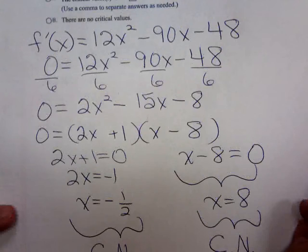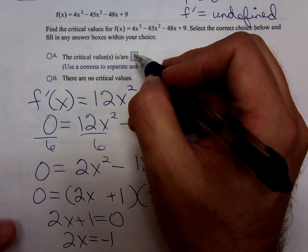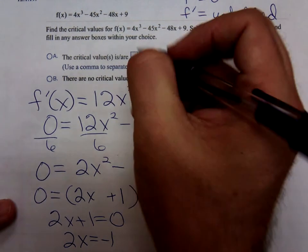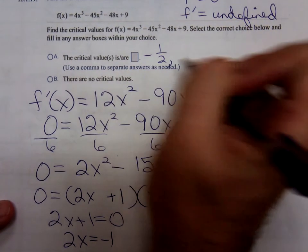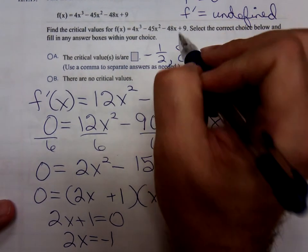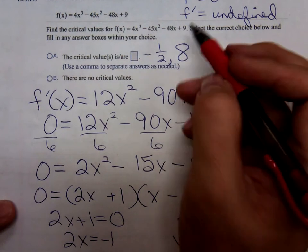Any questions there? So right here, I'd say that my critical values are negative 1 half, comma, 8.